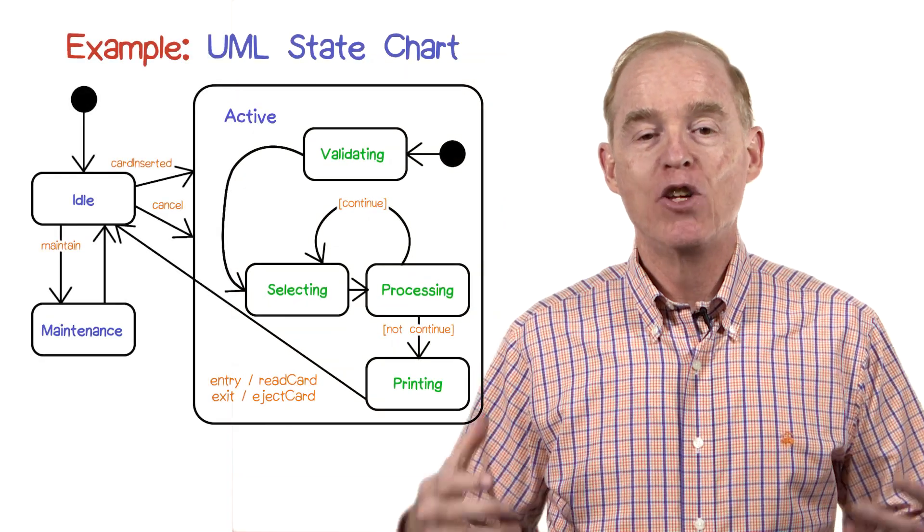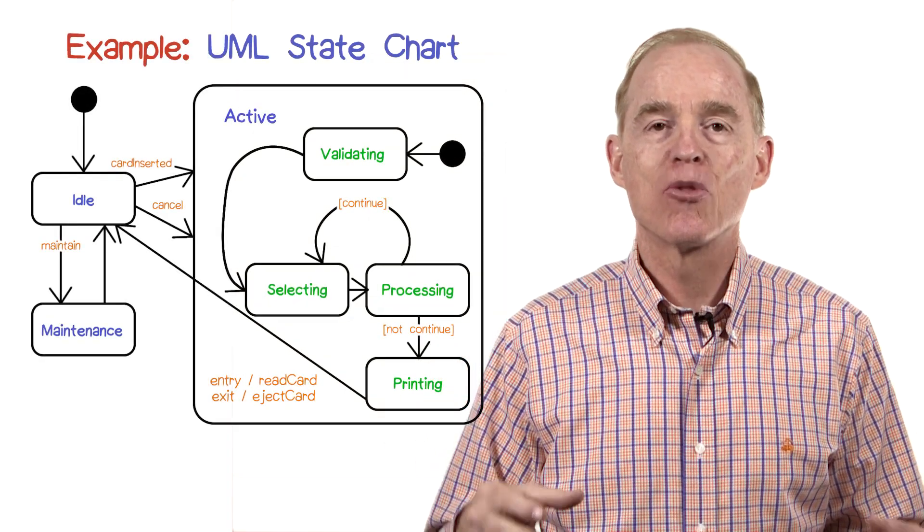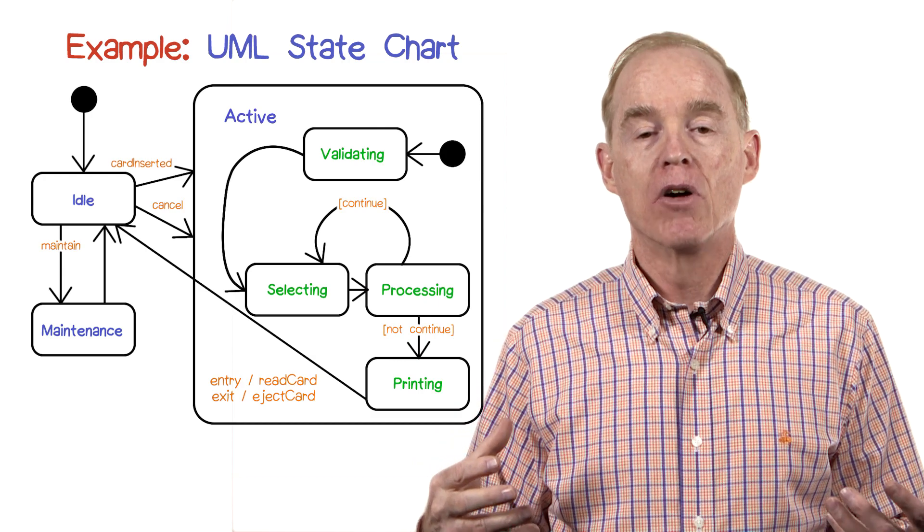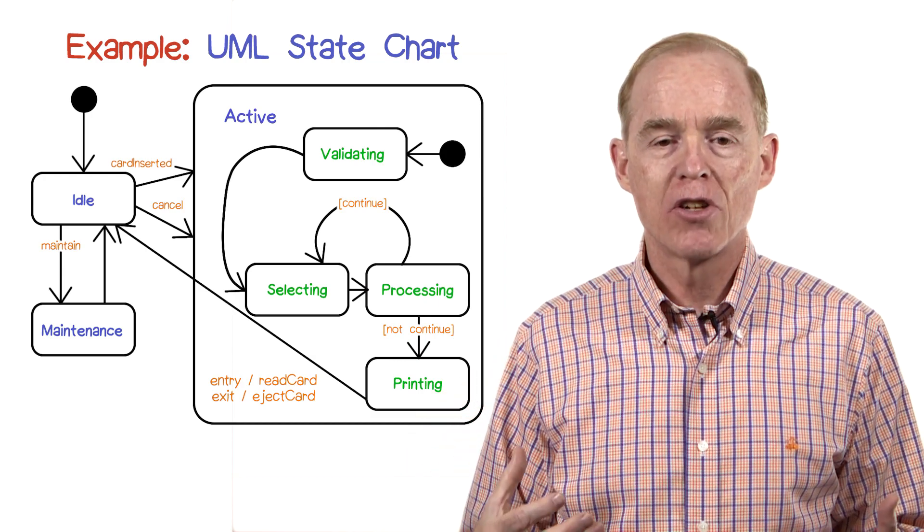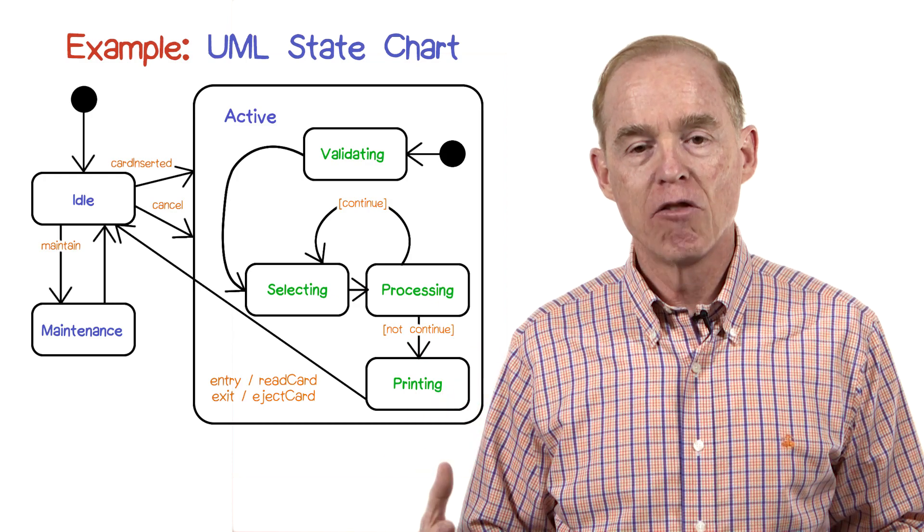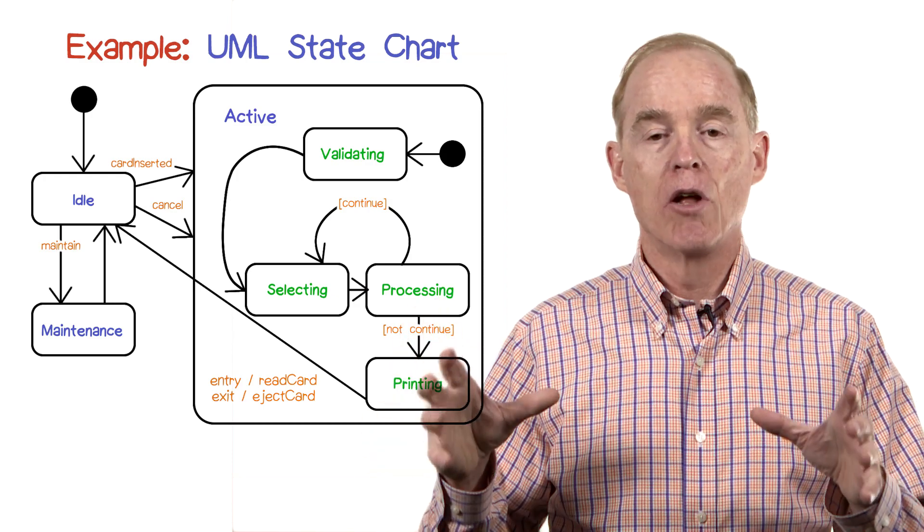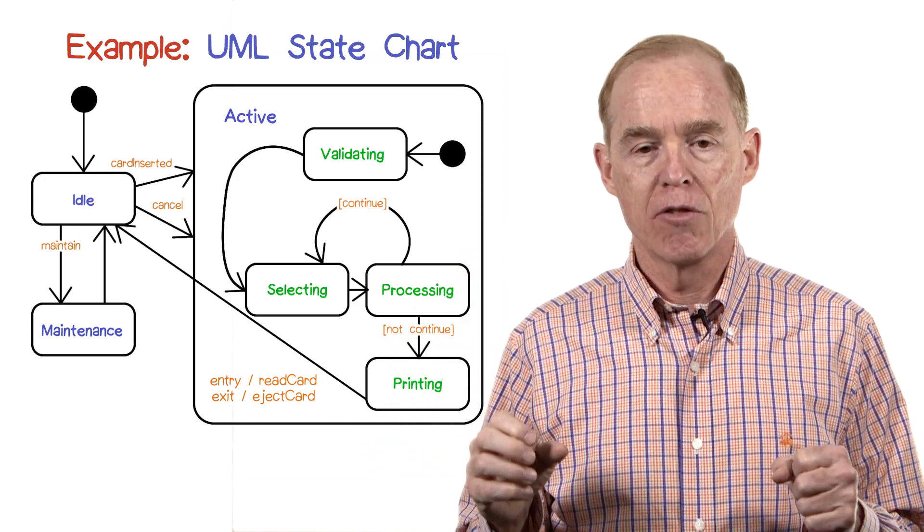Here's an example of a UML state chart that illustrates several other features of Harrell's notation. Once again, there are three outermost states: idle, maintenance, and active, and the active state itself has nested states inside of it.